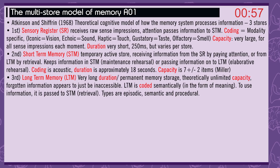Third: long-term memory. Very long duration or permanent memory storage with theoretically unlimited capacity. Forgotten information appears to just be inaccessible. Long-term memory is coded semantically, in the form of meaning. To use information it's passed to short-term memory through retrieval. Three types: episodic, semantic, and procedural.